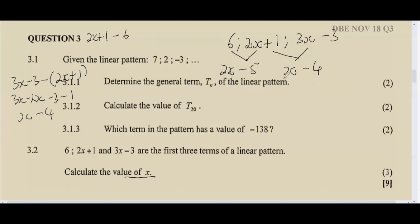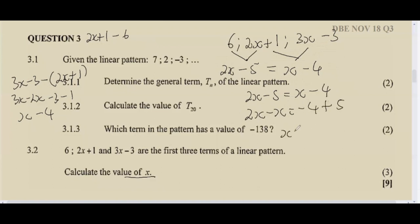Since the difference must be constant in a linear pattern, we equate the two expressions: 2x − 5 = x − 4. Solving: 2x − x = negative 4 + 5, so x = 1. That's how you answer that question. Make sure to pause and try it on your own — these are always easier questions to answer.